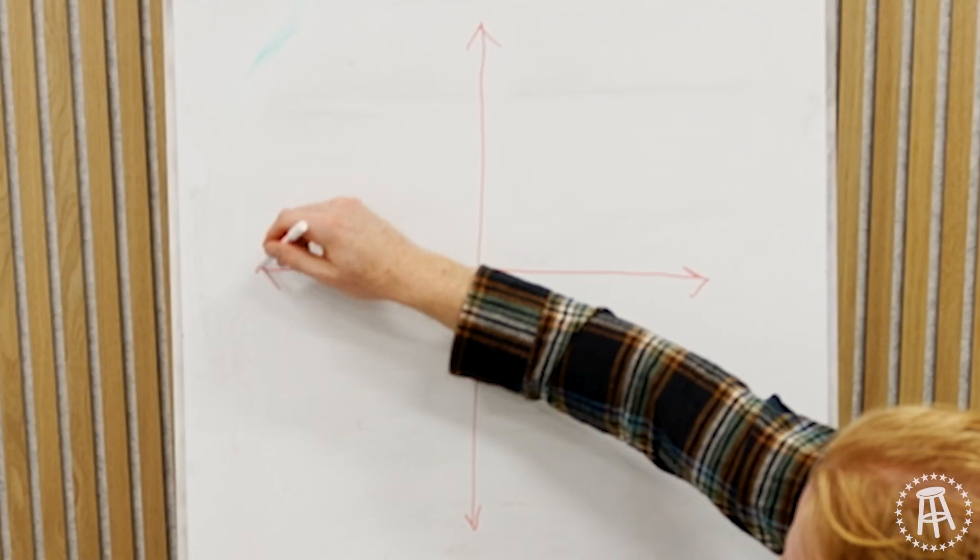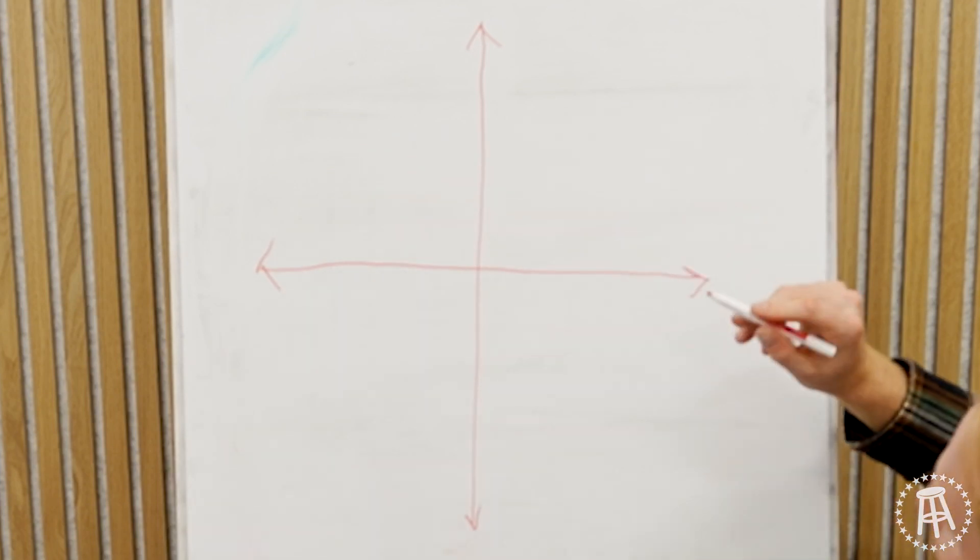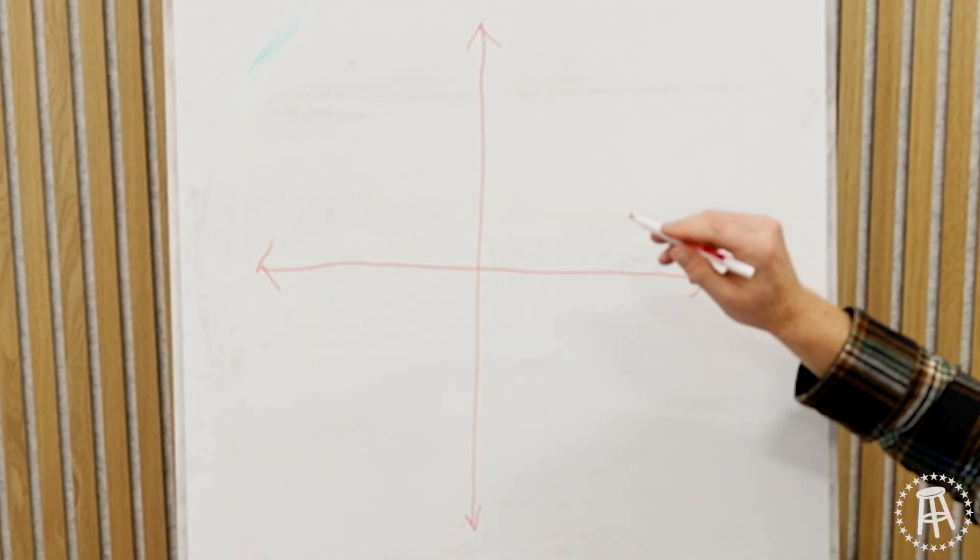Today we're going to do graphing. X and Y. I'm a graph guy. You know what this is called? It's on the tip of my fat tongue. It's like a canvas, maybe? Coordinate plane.